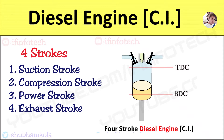In this video we'll discuss the actual valve timing diagram for a CI engine. CI stands for compression ignition, where air is compressed within the cylinder and the heat of compression is used to ignite the fuel. It is used in diesel engines. In this cycle there are mainly four strokes: suction stroke, compression stroke, power stroke, and exhaust stroke.